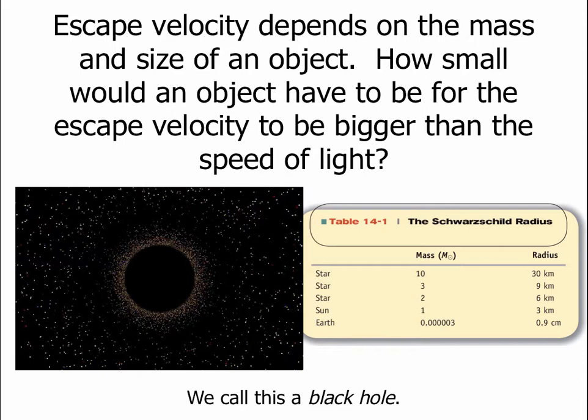So since nothing can escape an object like this, not even light, we would call it a black hole. And the size of a black hole is how close you would have to be before you would cross this horizon we call the event horizon, where if you're closer to the black hole than that, 3 kilometers for the Sun, you would never be able to get out.